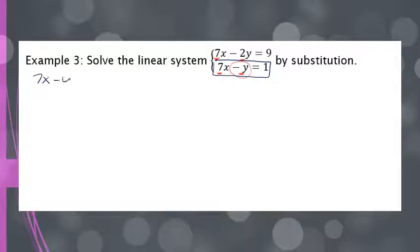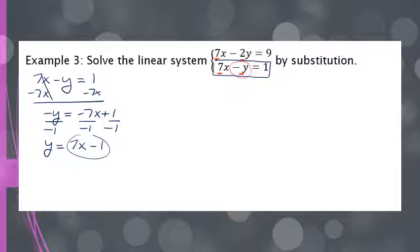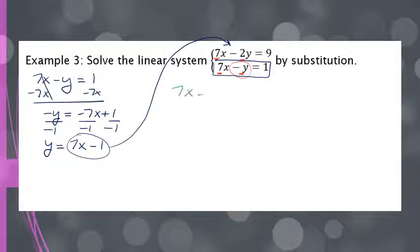I'll rewrite the bottom equation and subtract the x term, leaving me with negative y equals negative 7x plus 1. Then I divide everything by negative 1, leaving me with y equals positive 7x minus 1. Now I take this expression and plug it in where there's a y in the top equation. So I write 7x minus 2 times, and instead of y, I write 7x minus 1, and that equals 9.